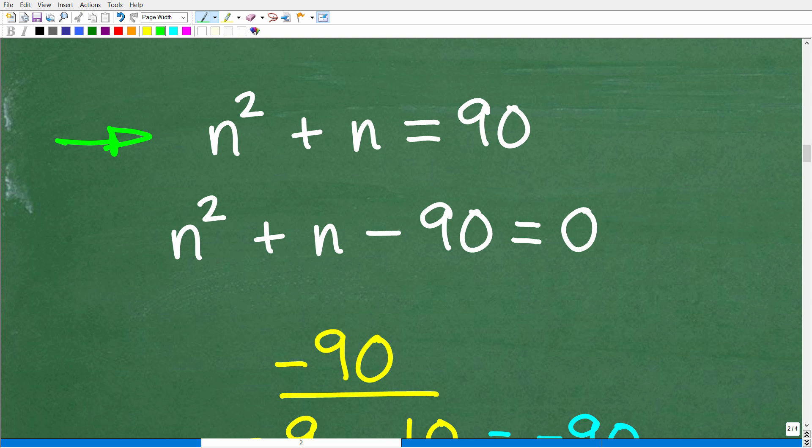First of all, what we want to do is set this entire equation equal to zero. So we have this 90 over here. We'll subtract 90 from both sides of the equation. Now we have N squared plus N minus 90 is equal to zero. At this point, we have this lovely quadratic trinomial. So what we're going to try to do is factor this thing. We can solve this hopefully by factoring.